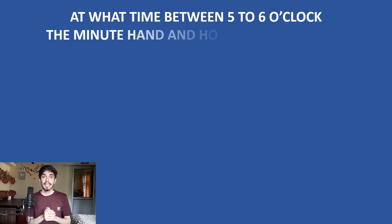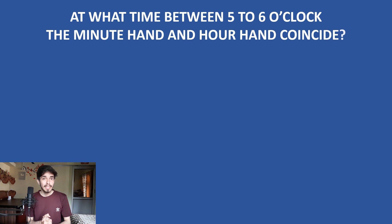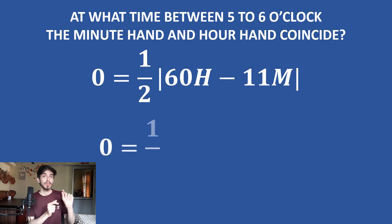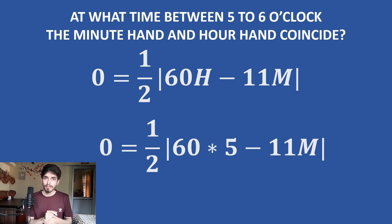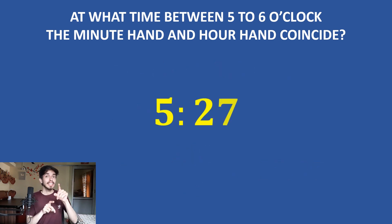With this formula you can solve lots of clock hand problems. Now let's solve a question: at what time between 5 and 6 o'clock do the hour hand and the minute hand coincide — that is, make an angle of 0 degrees? Put 0 in place of the angle. Since we're looking between 5 and 6, put h = 5 and solve for m. We get m = 27.27, meaning approximately at 5:27 they will coincide.